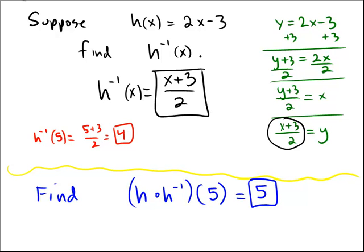And then, after doing that, take the result of 4 and stick it into the h function. So h of 4 would be 2 times 4 minus 3. In other words, 8 minus 3, which is simply 5. So 5 went to 4, and then 4 goes right back to 5. So h of h inverse of 5 is the number 5.